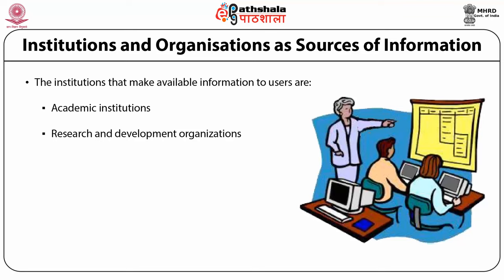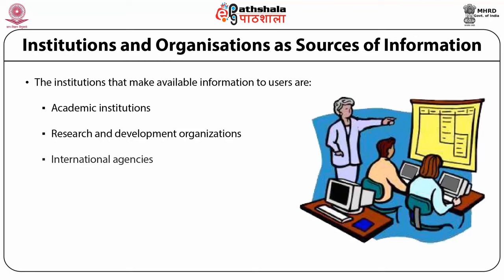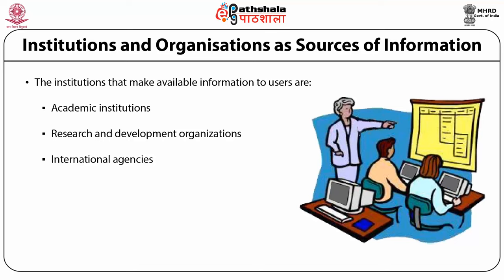The third category is international agencies. An international organization is one with international membership scope or presence. These organizations operate at international or regional level and usually collect, process, generate, and disseminate useful information through their products, services, or publications. The next category is government ministries, departments, and agencies, which usually make available authentic and latest data related to their sphere of activity, as they gather and generate information from their own sources.